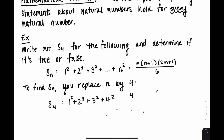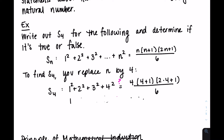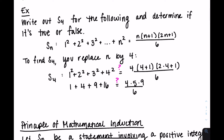On the right hand side, you get 4 times (4+1) times (2·4+1) over 6. Our goal is to see if both sides are equal. That gives you 1 plus 4 plus 9 plus 16, which may equal 4 times 5 times 9 over 6. The left hand side is 30, which does equal 30 — so this is a true statement when N equals 4.